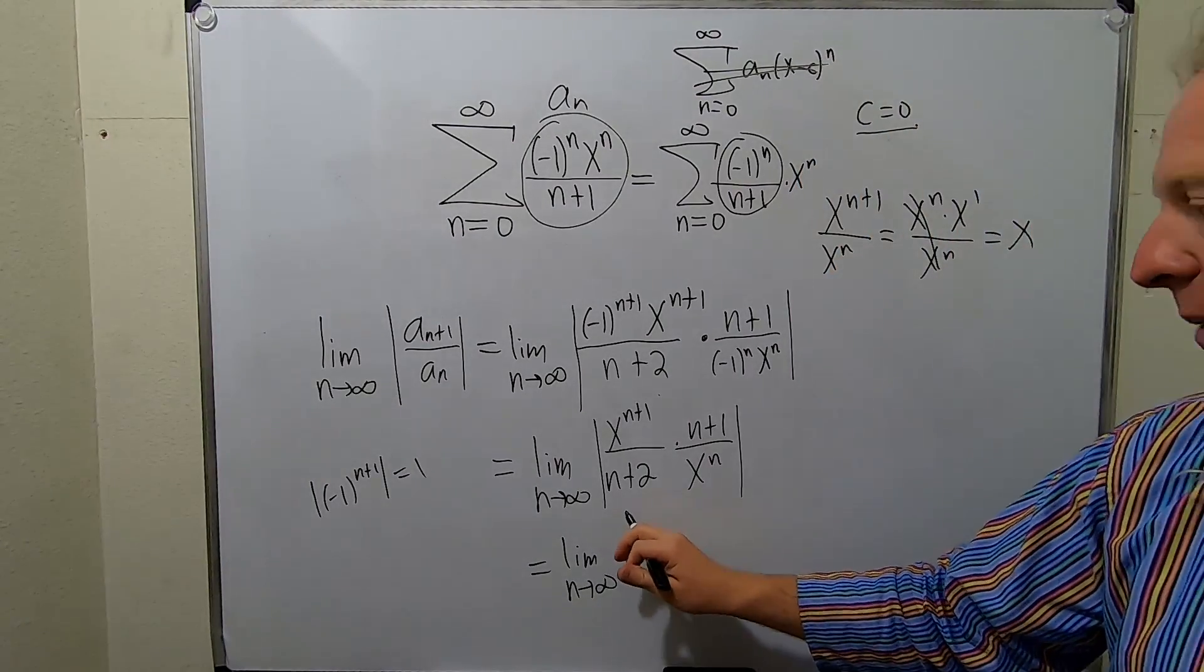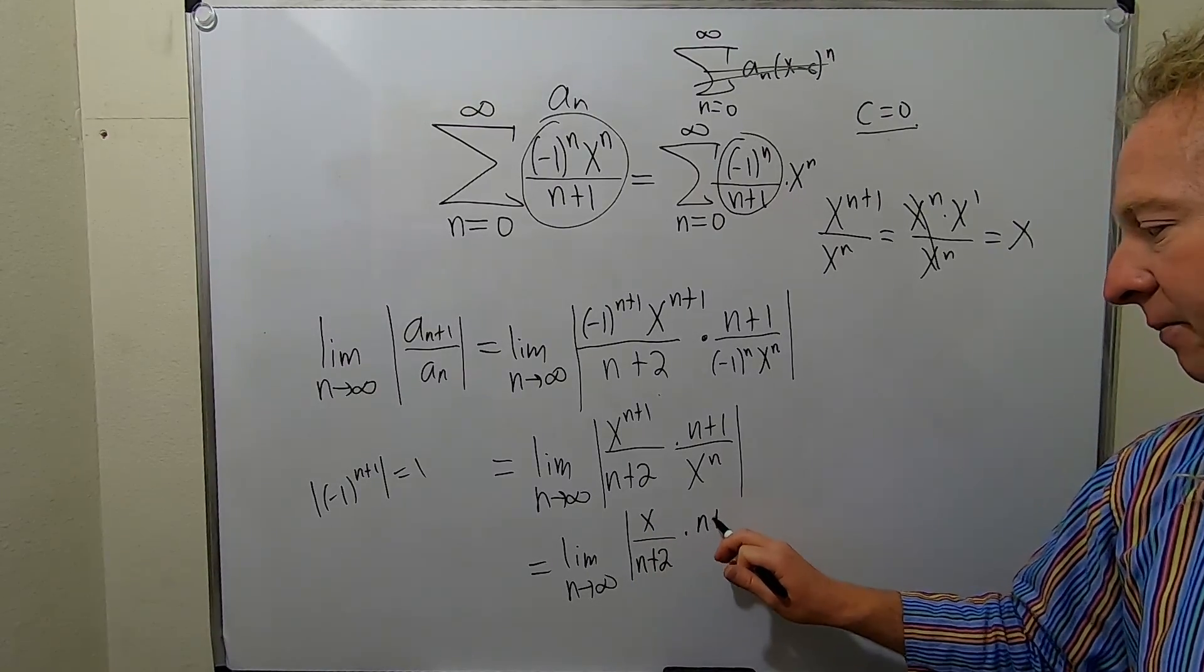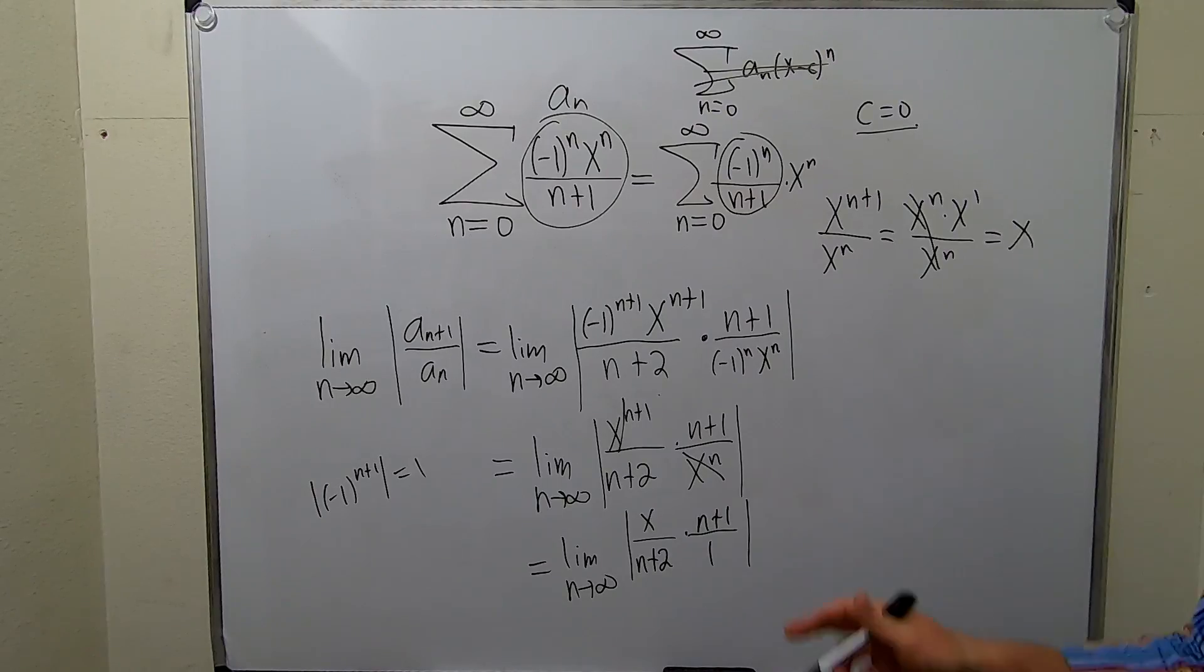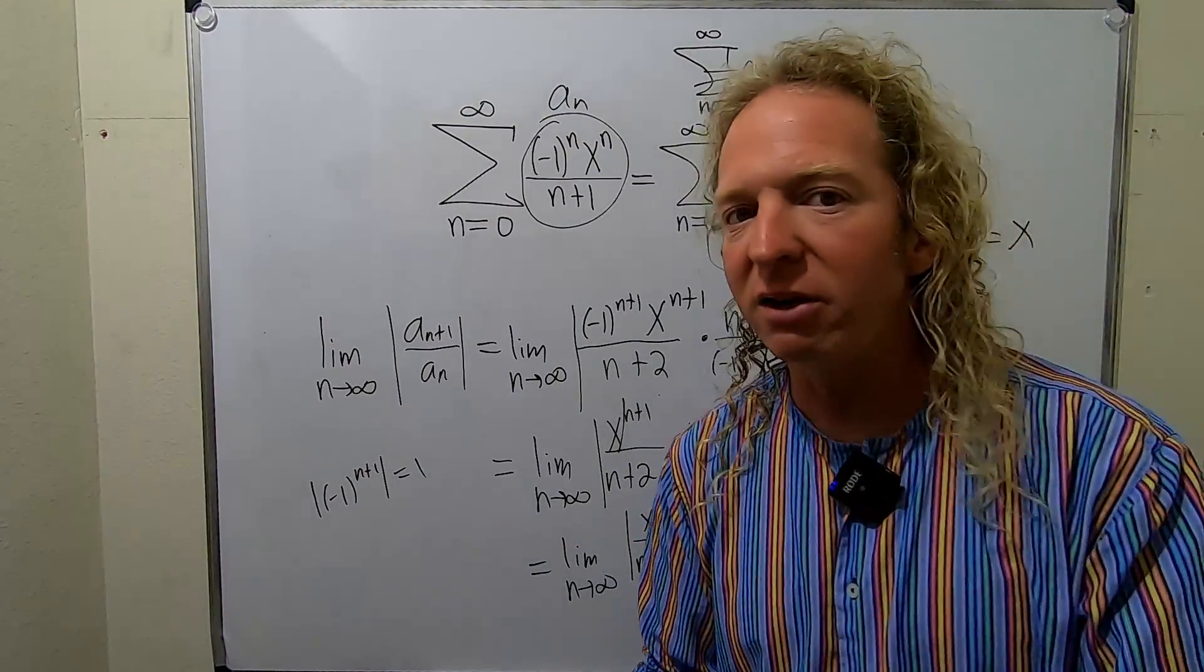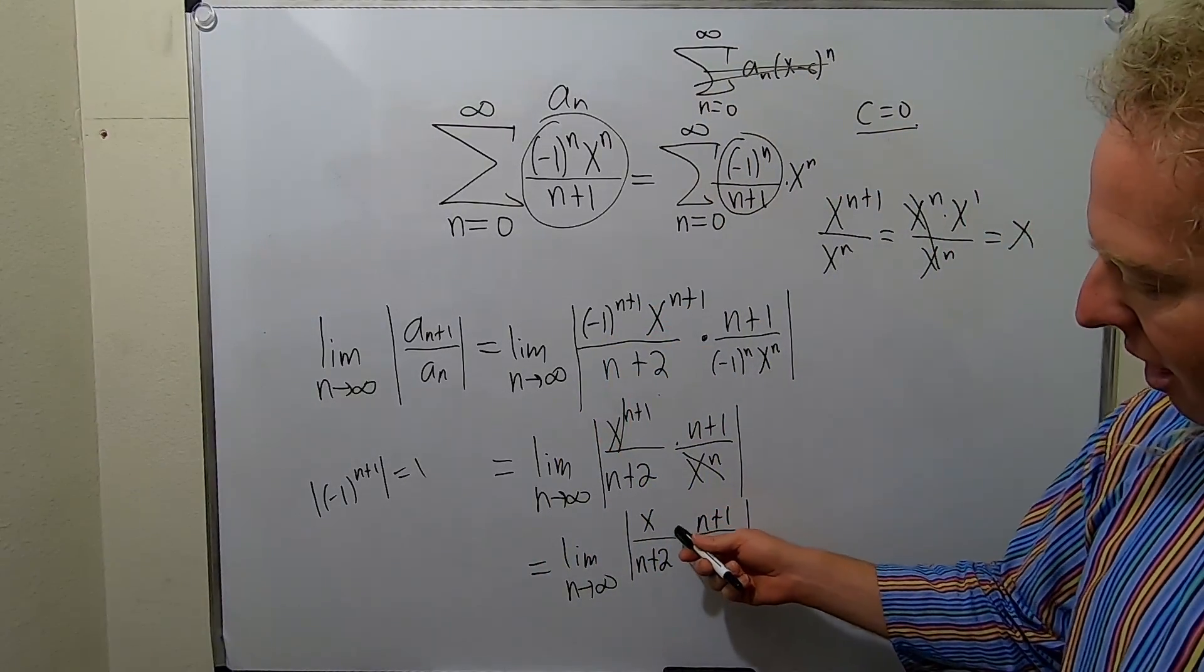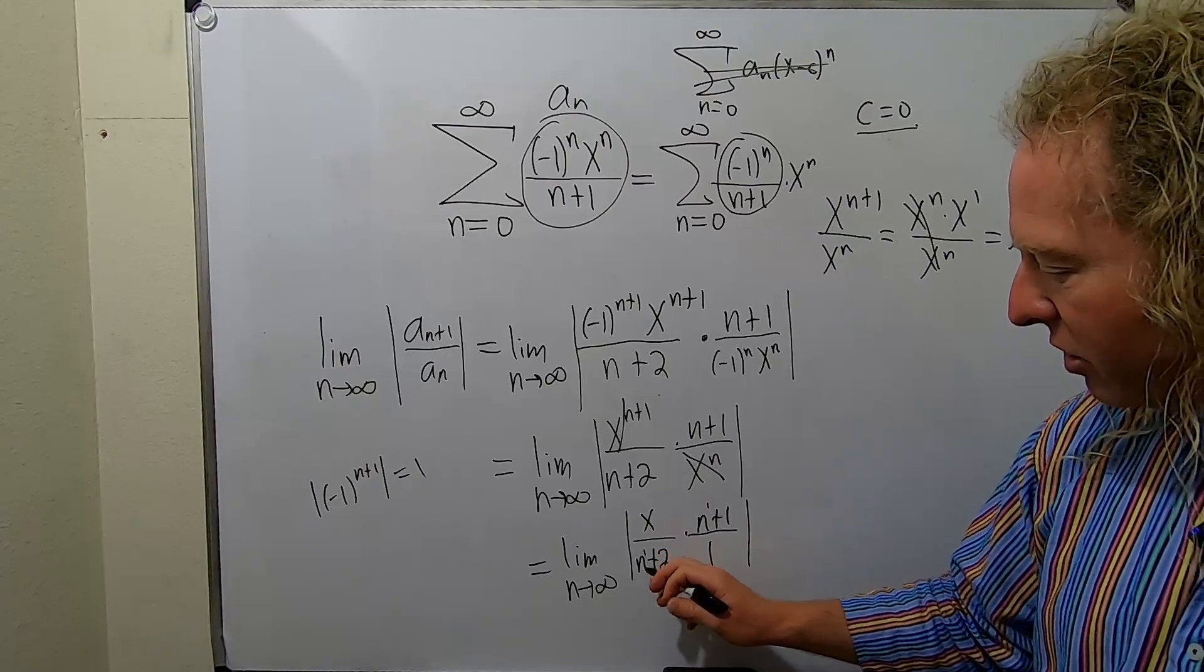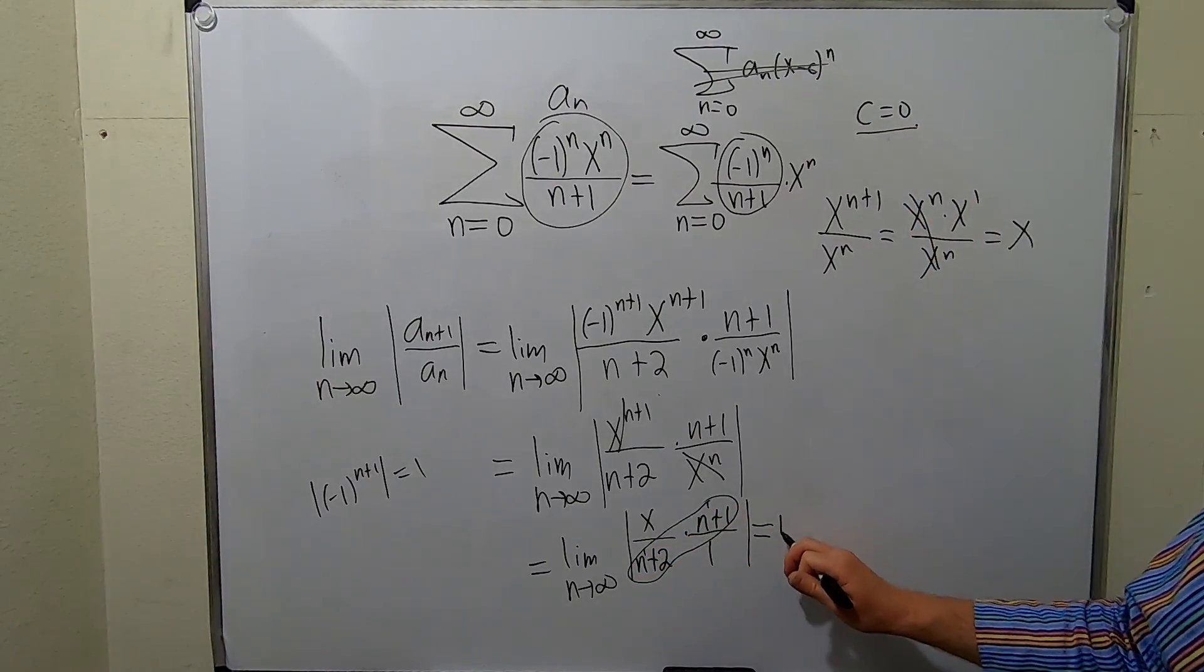So this is equal to the absolute value of x over n plus two times n plus one over one. This completely went away because this canceled with this piece. You were left with x and we still have our absolute value. We can't drop the absolute value yet because we don't know what x is. x is a real number, it could be positive or negative. We have to leave it there. When we take the limit now, we just notice that x is independent of n. x is like a number. So all we really care about is the n's. The degree here is one, the degree here is one. So the limit of this expression is going to be one. So we're just left with the absolute value of x.